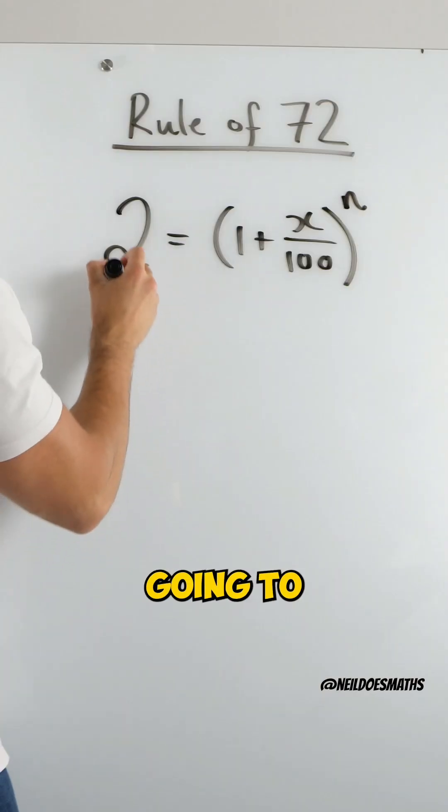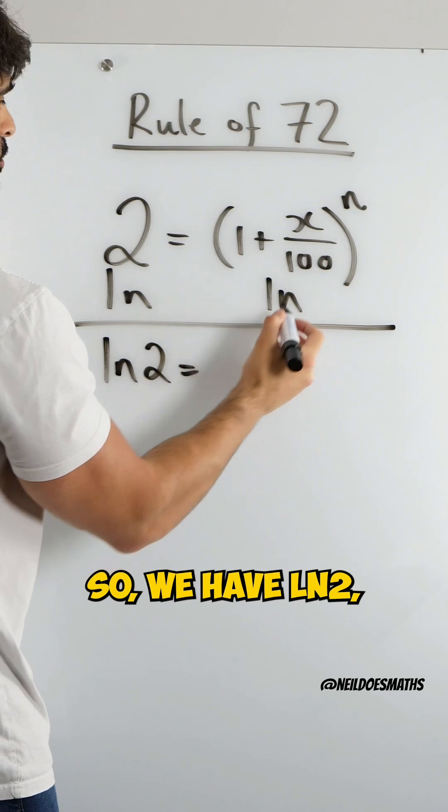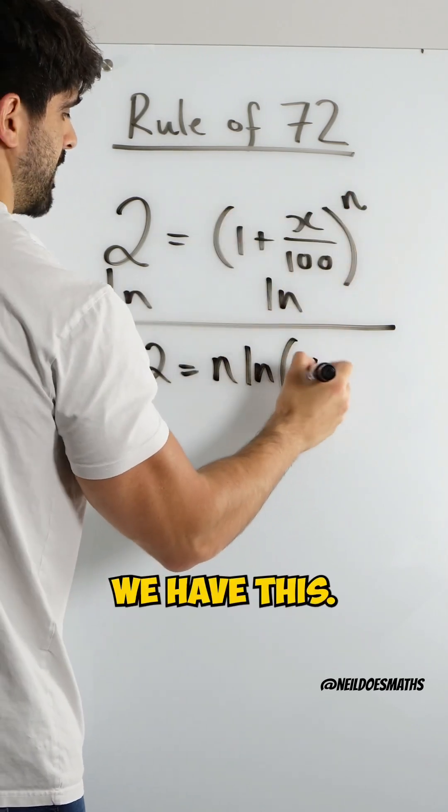I'm left with 2 equals this. The next thing we're going to do is we're going to ln both sides, which is a logarithm which allows us to bring down the value of n. So we have ln 2 equals ln of all of this, bringing down the n.